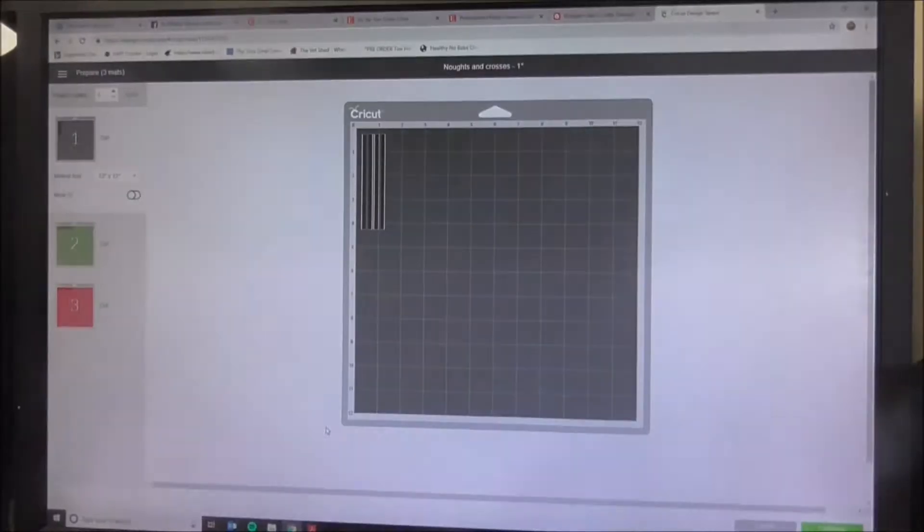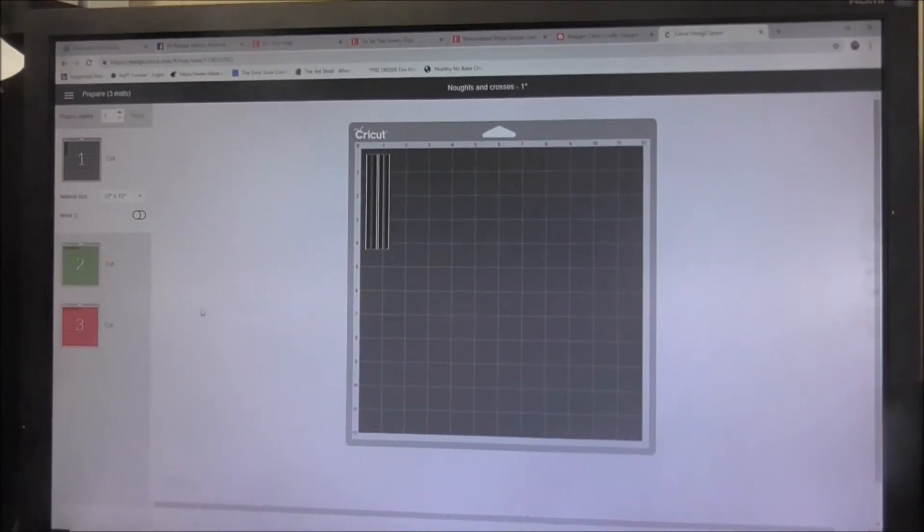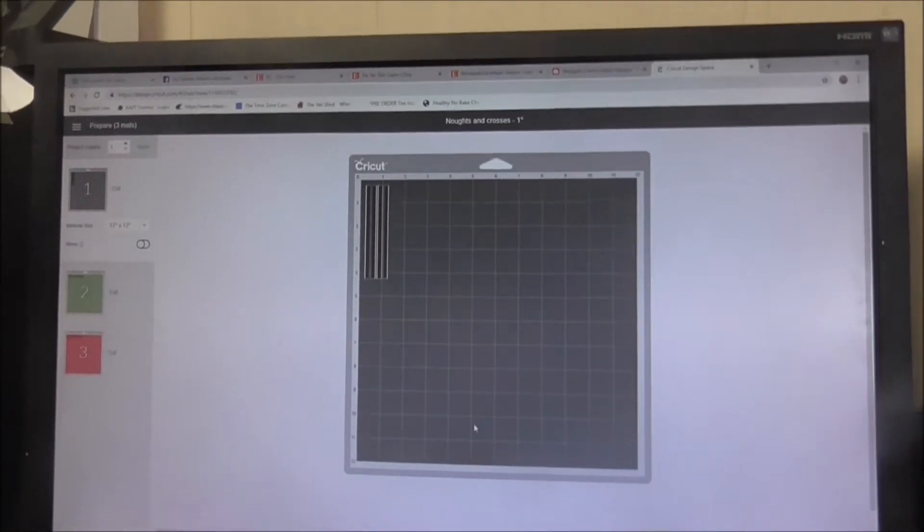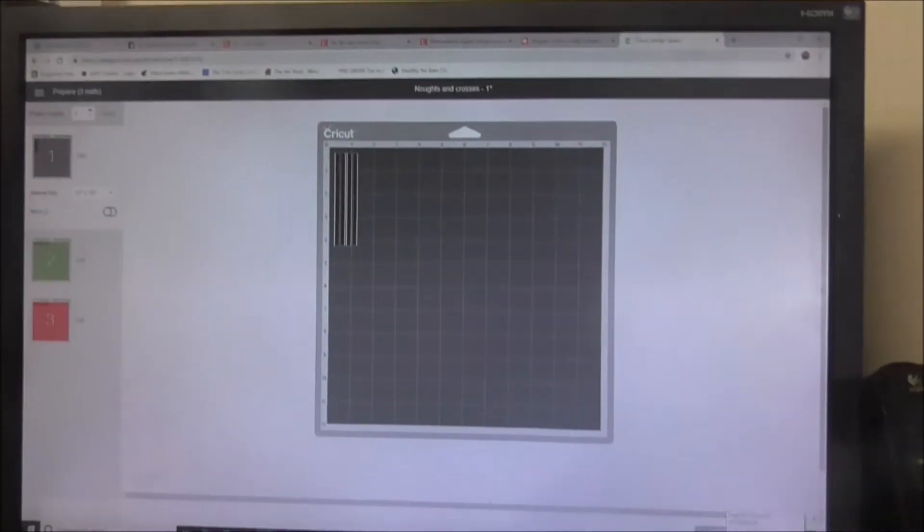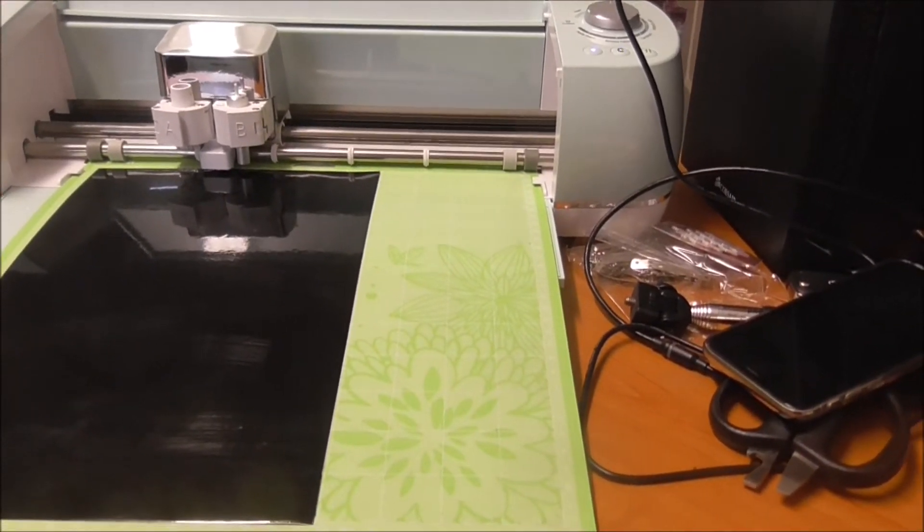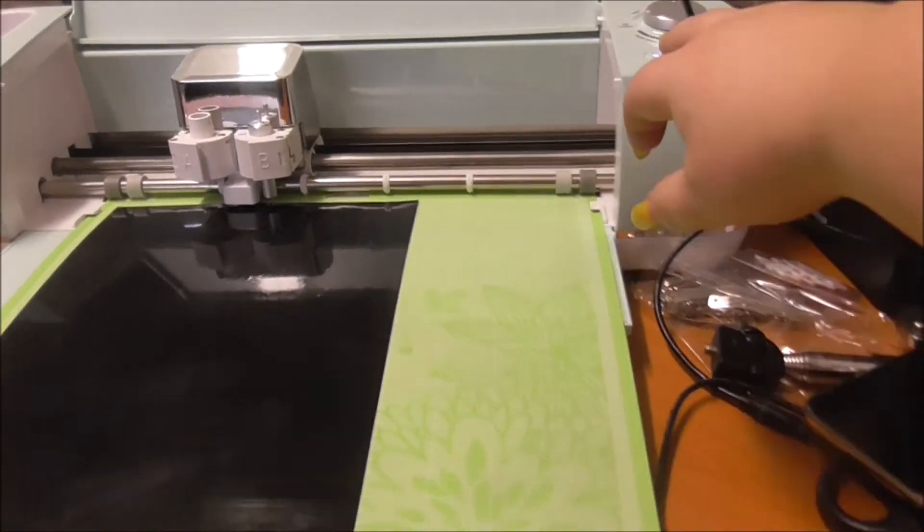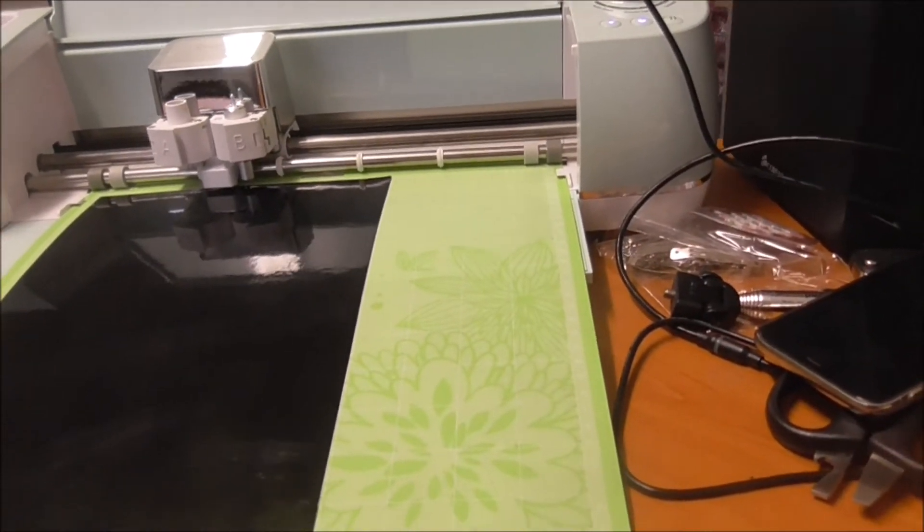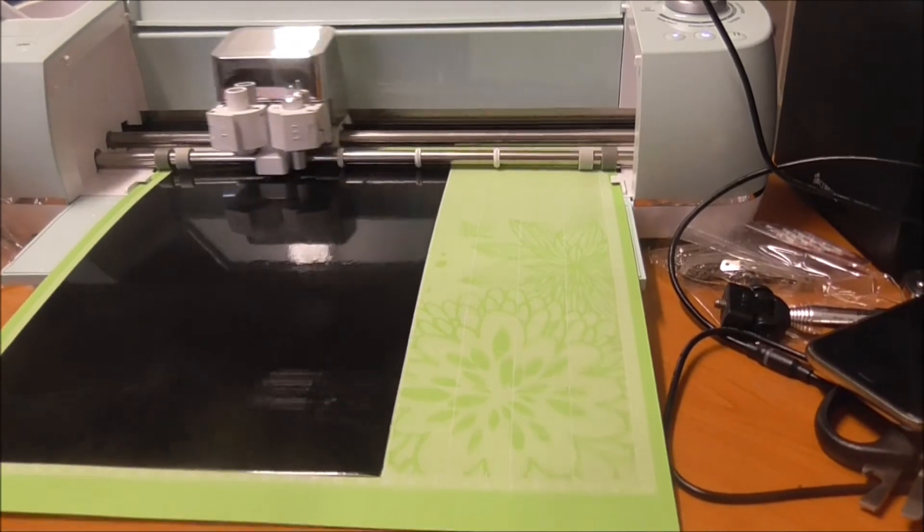I will just be using my Explore Air 2 for this one because as you can tell I'm at my main computer instead of my laptop. We're just going to go ahead and prepare our mats. No need to mirror this one as we're using just vinyl and I am using the outdoor graded vinyl so I'm going to use fast mode for this one and cut it out super quickly.